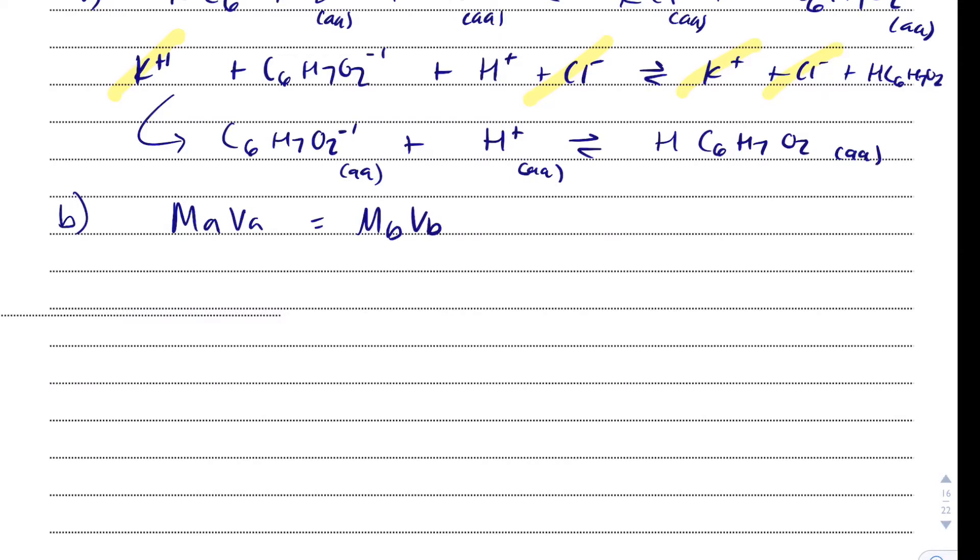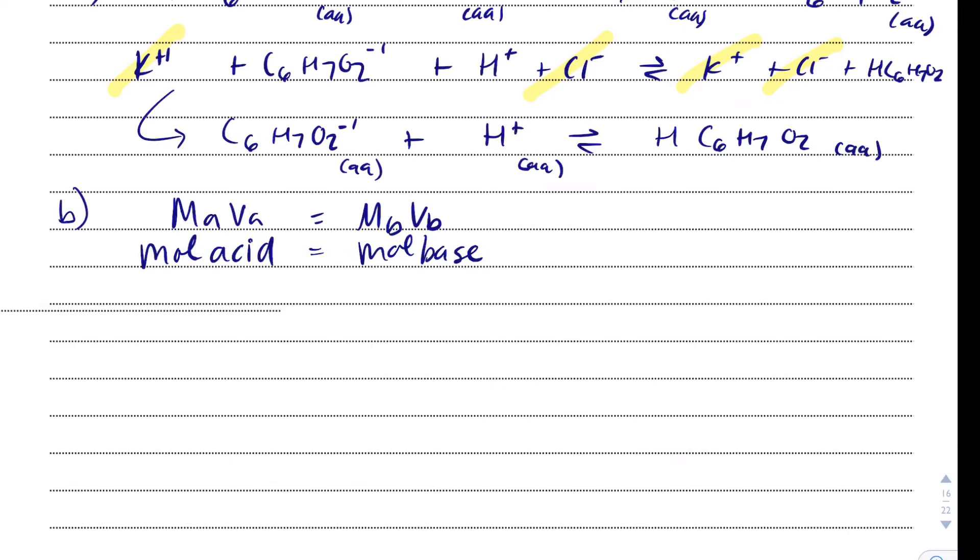And on the AP test, they don't like you to use this equation. But there's a way that you can trick them to get the points, is that if you say moles of acid equal moles of base. If you say that, then AP cannot take off on your test. But if you don't include that, you're going to risk not getting any points even though you'll have the right answer.